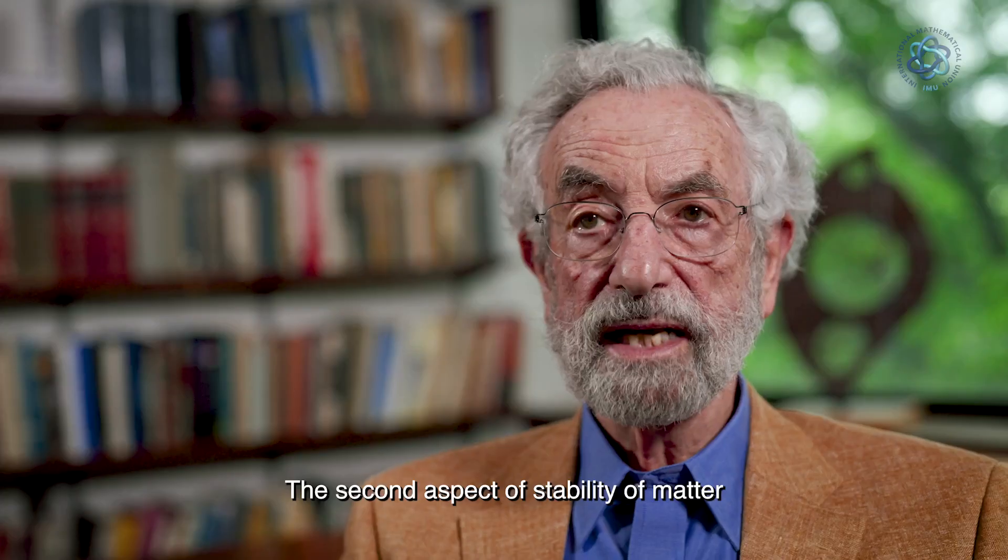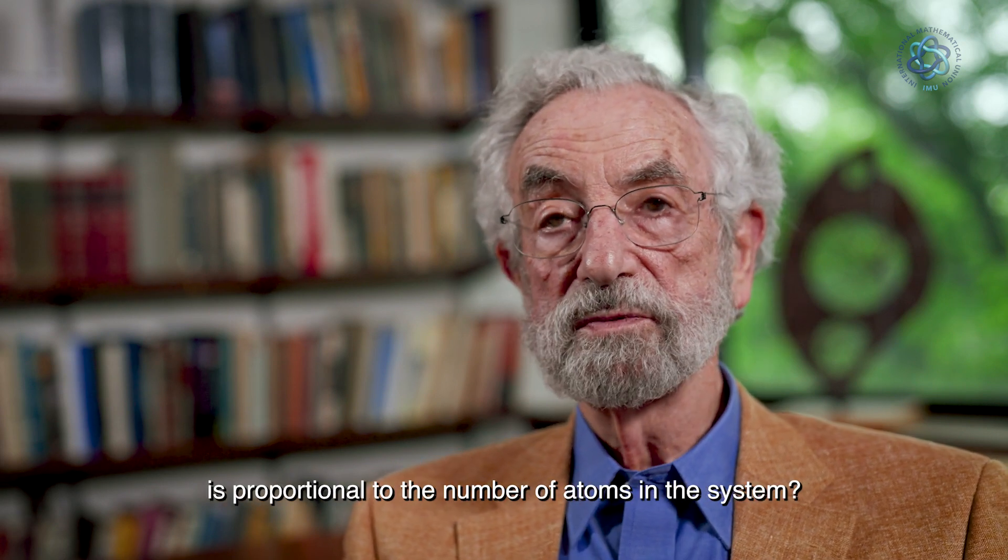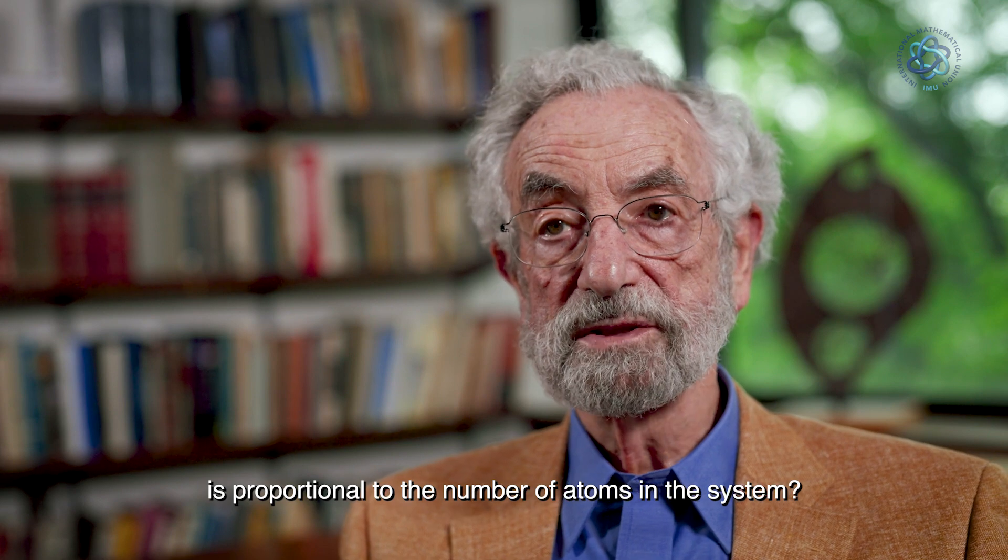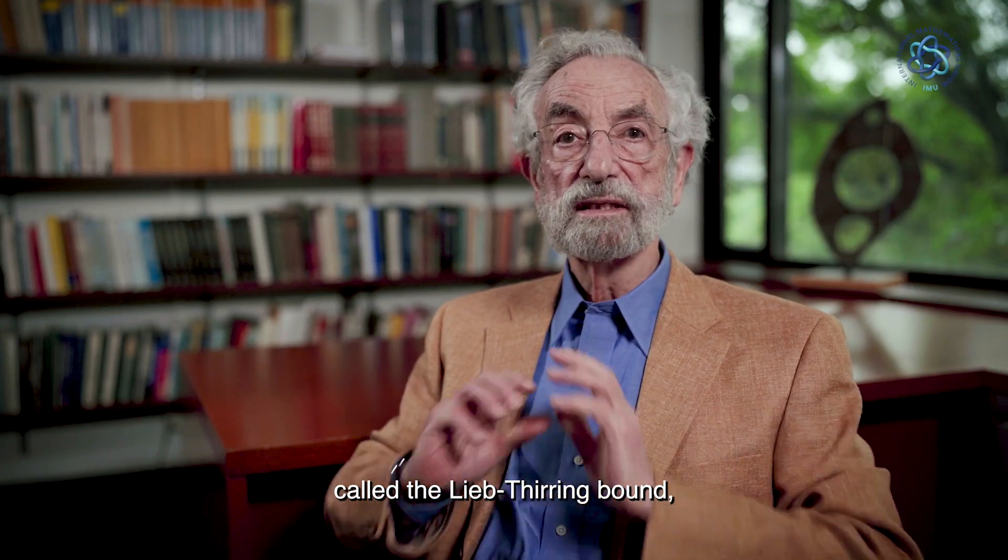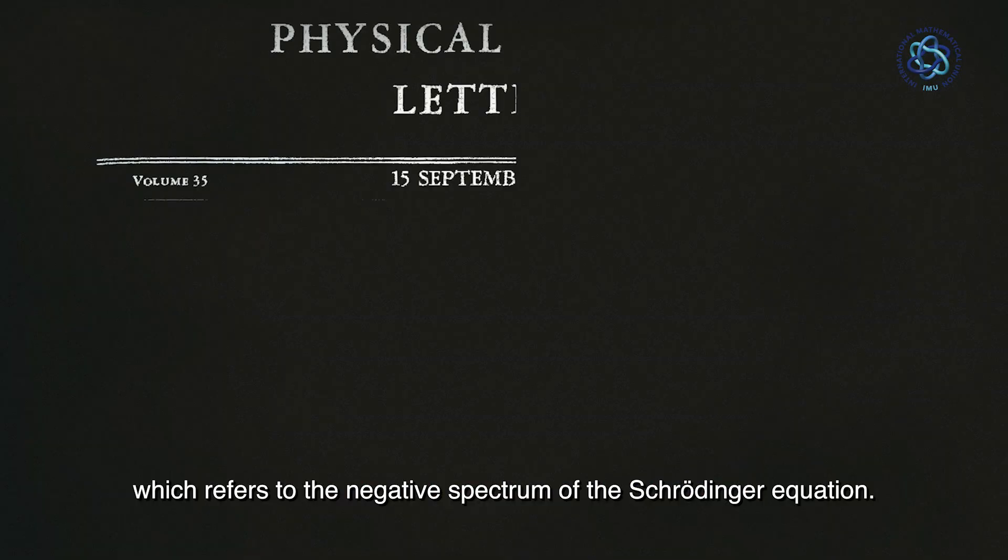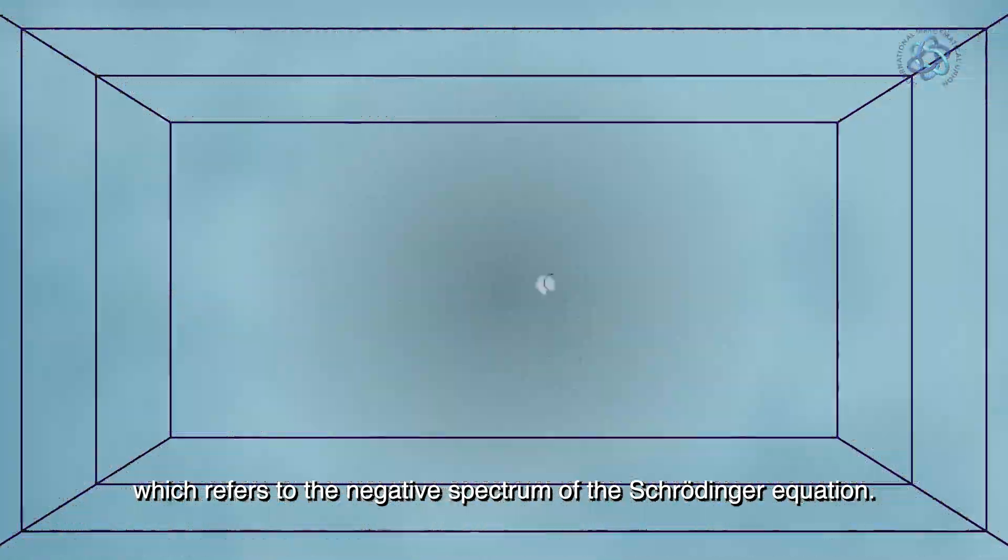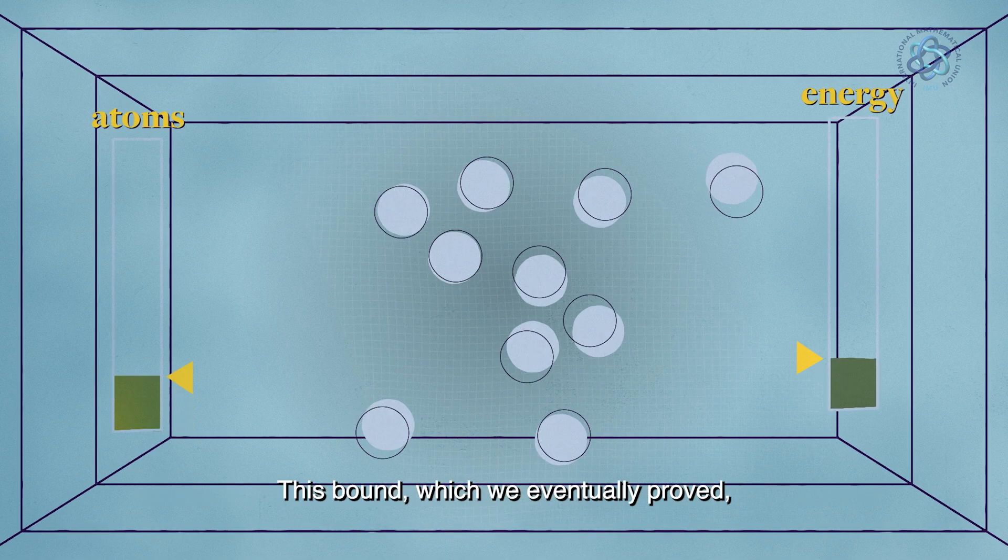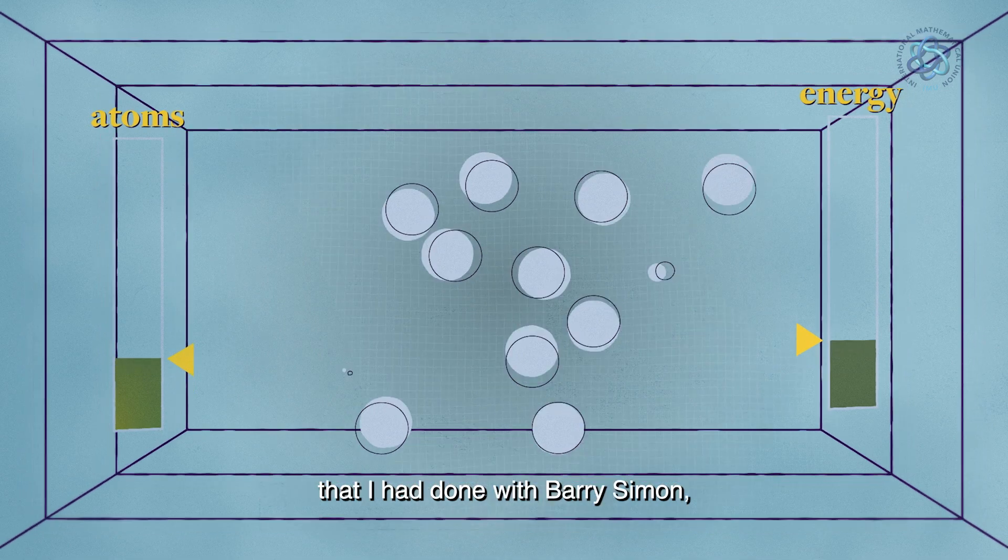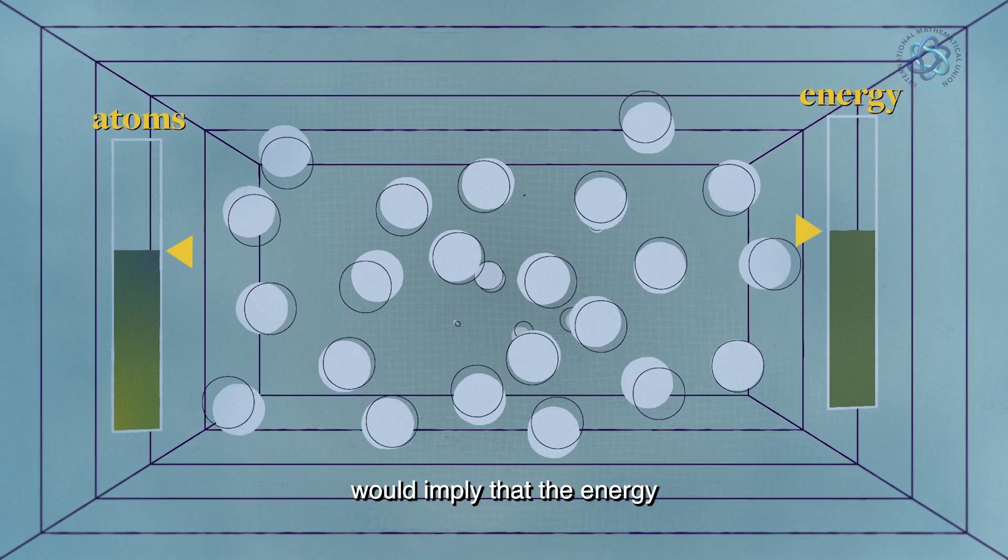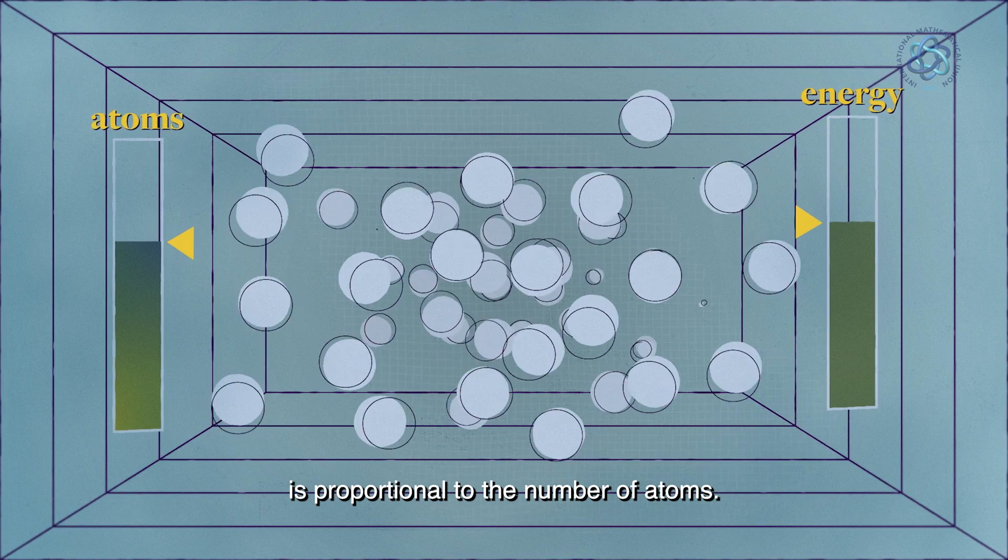The second aspect of stability of matter is how do we know that the energy of a system is proportional to the number of atoms in the system? We had to invent a piece of analysis called the Lieb-Thirring bound, which refers to the negative spectrum of the Schrödinger equation. This bound, which we eventually proved, together with the Thomas Fermi theory work that I had done with Barry Simon would imply that the energy is proportional to the number of atoms.